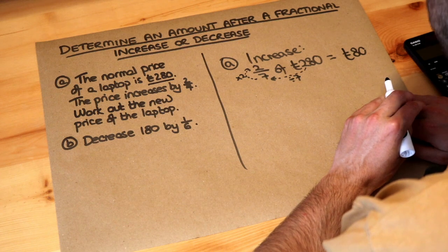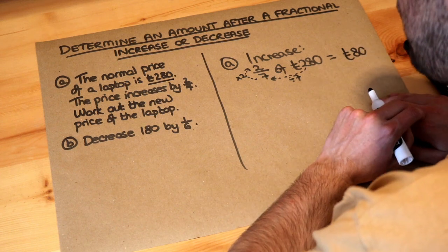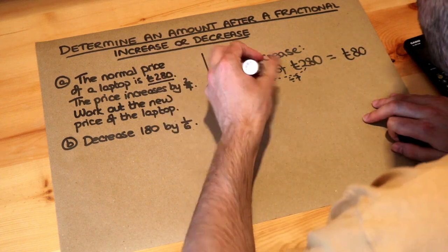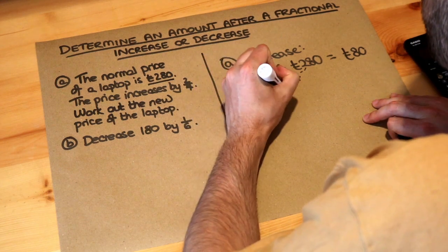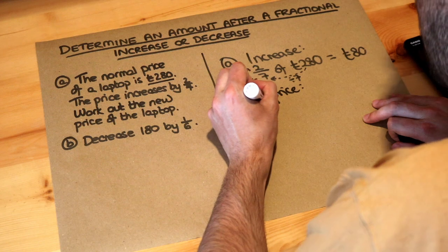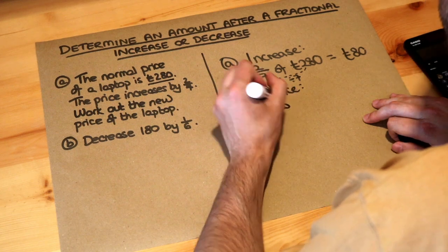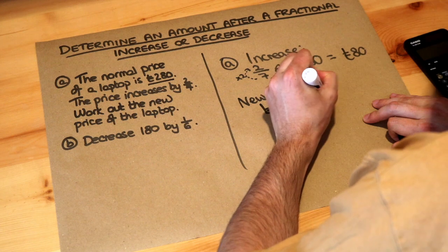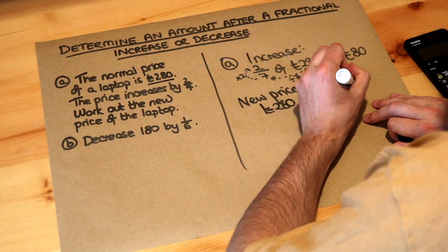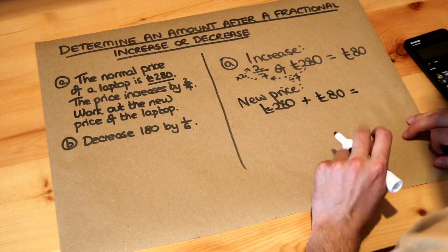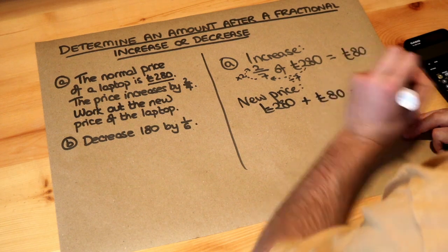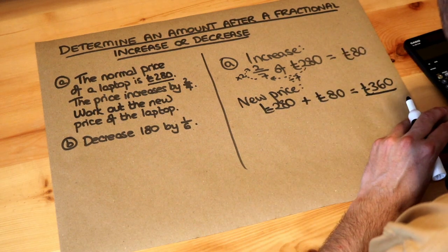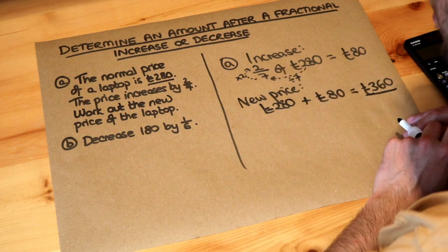So the increase in the price of the laptop was £80, and because that was the increase we just need to take £280, the original price of the laptop, and add on that increase of £80. So it's £280 plus the £80, and if you add those with a calculator or otherwise that gives you £360. So that's the new price of the laptop after the increase of two-sevenths of its value.